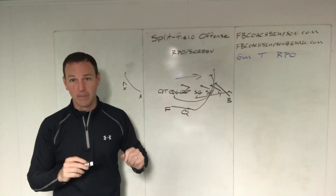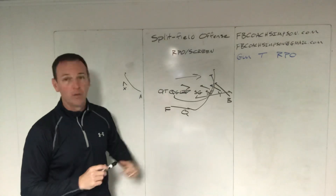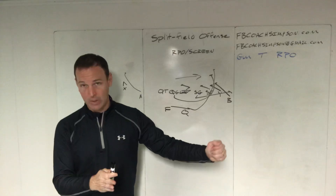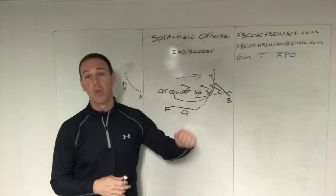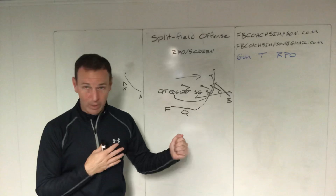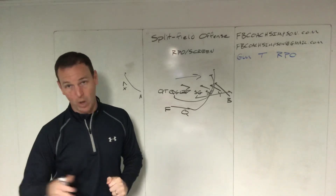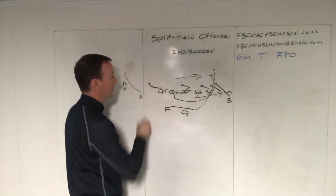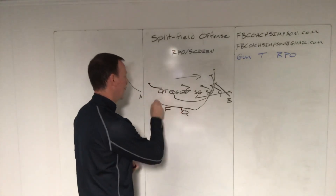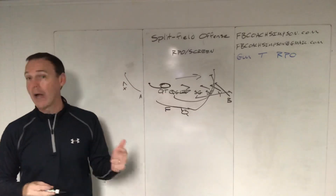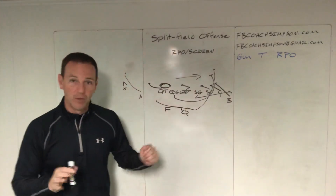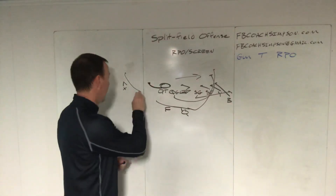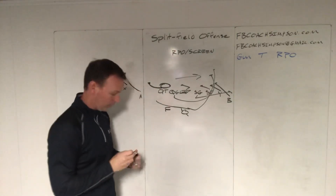That leaves one offensive lineman — our quick tackle. That's how we tag this guy into our RPOs: we give him tag words. That lets him know we want you to go block here, be involved in the screen, or we want to involve you in the run with a tag. This one we're going to run Steel, which sends him out here. The quarterback is making the read off of this player. So we're reading one guy, but we're running a split field play. Our quick tackle is involving himself in the screen game, and our A and our X are in the screen game.